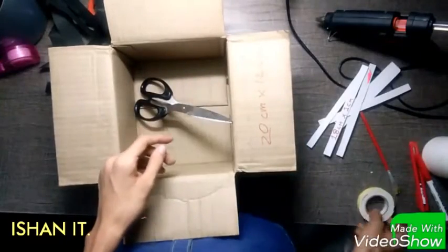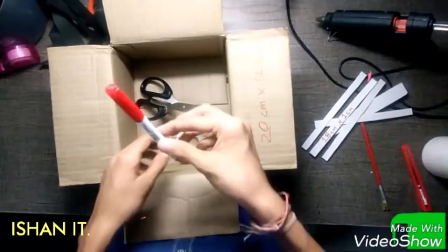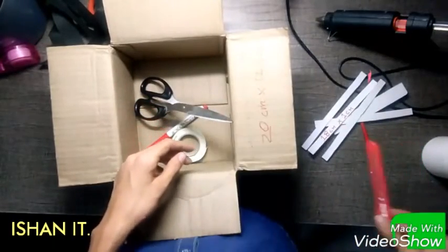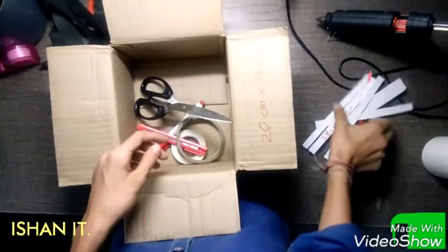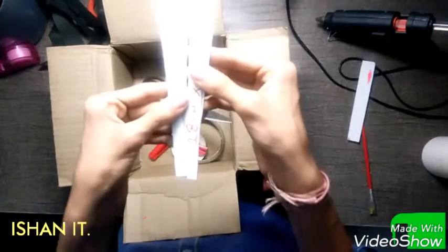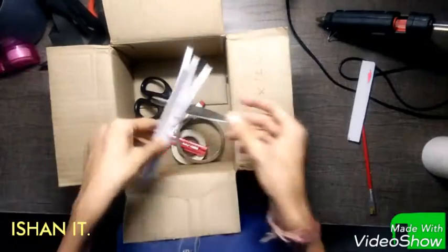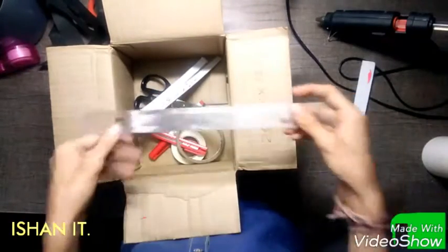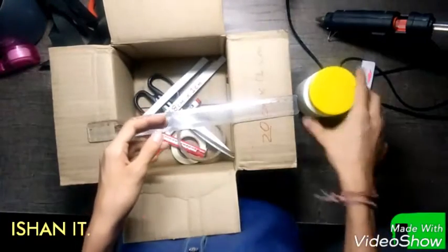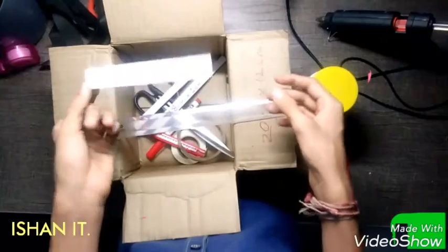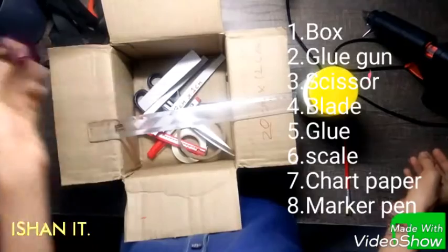A scissor, a double sided tape, marker, blade, cellotape, 4 pieces of mount board cut into 1cm, scale, glue, a piece of mount board, glue gun, and chart paper for decoration.